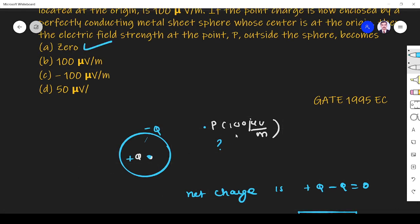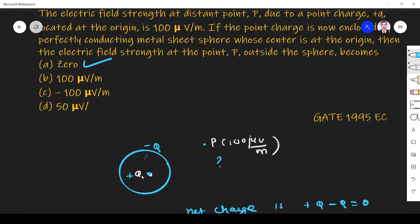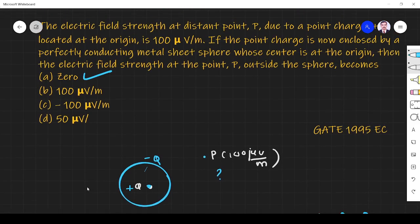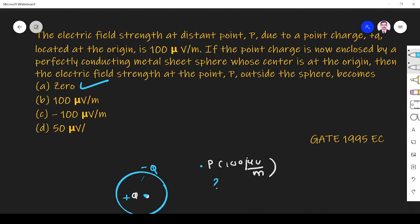If it is not enclosed by any sheet, it will produce 100 microvolt per meter. If you enclose with a metal sheet, then it will induce opposite charge. So net flux will be zero. So there is no flux, there is no field. Option A is the right answer. Thank you.